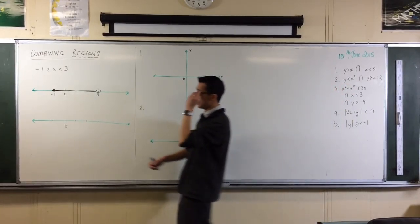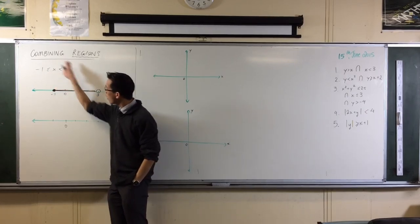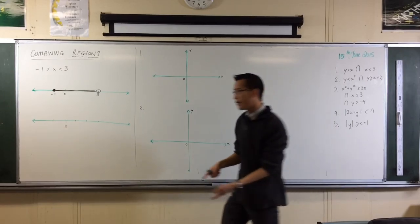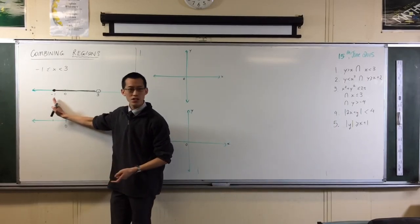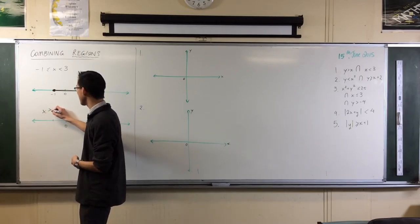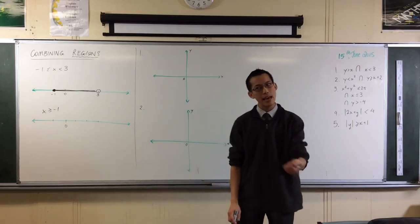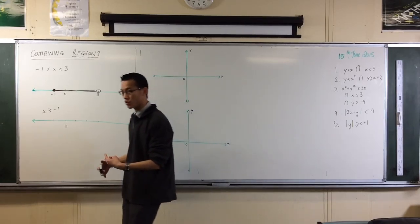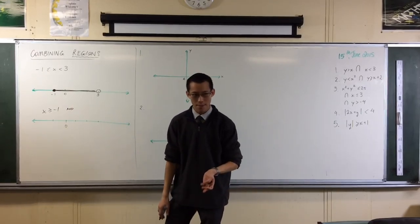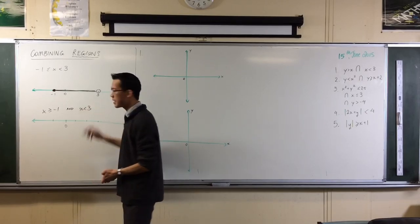However, I just want to call your mind to the fact that this is really an abbreviation. This one set of inequalities is really shorthand for 2. It's shorthand for x is greater than or equal to negative 1, and at the same time, x must be less than 3 and not inclusive of the boundary.